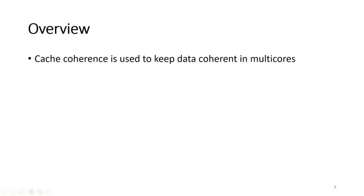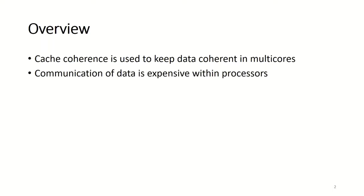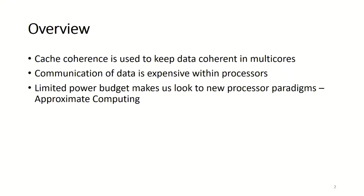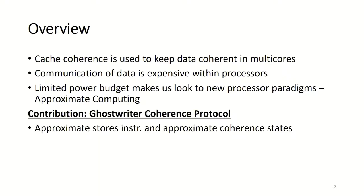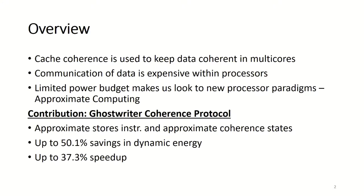As an overview, cache coherence is used to keep data coherent in multi-core processors. However, communication of data is expensive. The limited power budget makes us look to new processor paradigms — in this case, we look at approximate computing. Our contribution is Ghostwriter, a cache coherence protocol that introduces approximate store instructions and approximate coherence states. We see up to 50% savings in dynamic energy of the interconnection network and memory system, and also see up to 37% speedup.